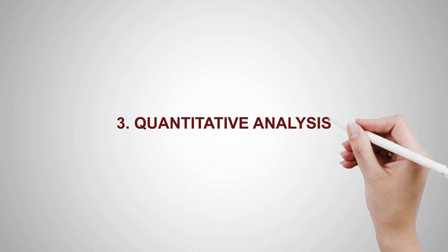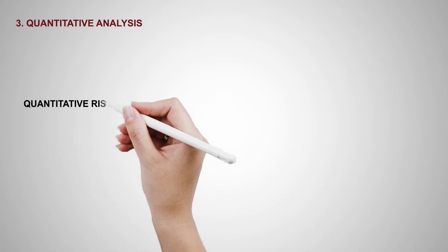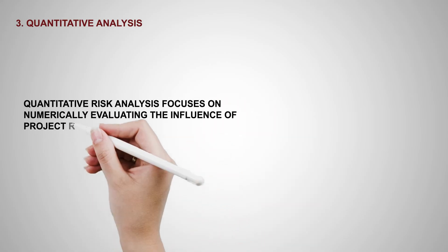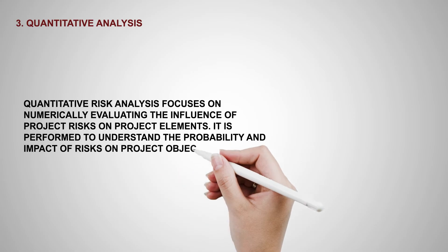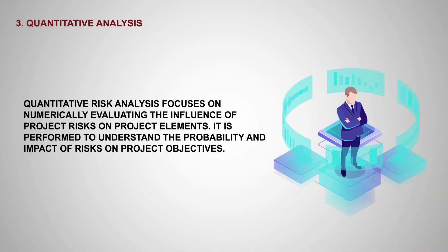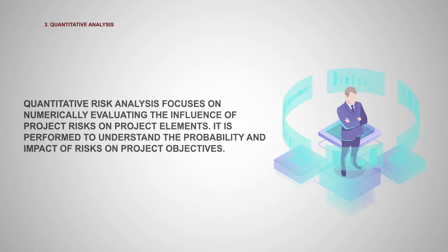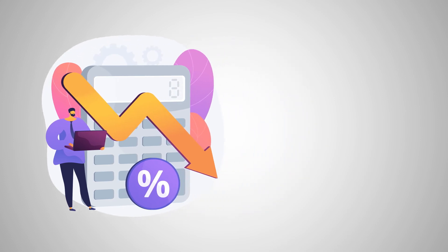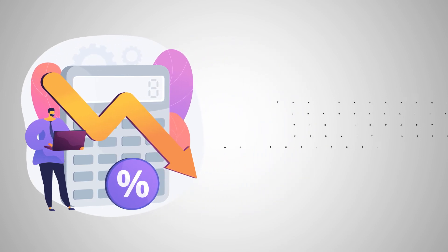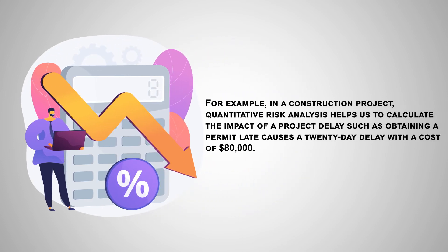Step 3: Quantitative Analysis. Quantitative Risk Analysis focuses on numerically evaluating the influence of project risks on project elements. It is performed to understand the probability and impact of risks on project objectives. For example, in a construction project, quantitative risk analysis helps us to calculate the impact of a project delay, such as obtaining a permit late causing a 20-day delay with an associated cost.